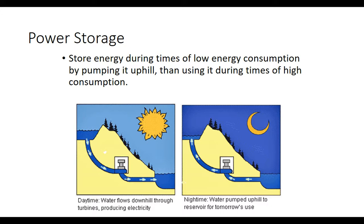Dams can also be used to store power, which is significant because we don't have a good way to store electricity on a large scale — even powering a car with batteries is hard. One cool option is using a dam to store gravitational energy: during low-consumption periods, like at night when your nuclear or natural gas plant produces more than people use, you run the dam backwards and pump water back up. Then during the day, you let it flow through and create electricity when you need extra.